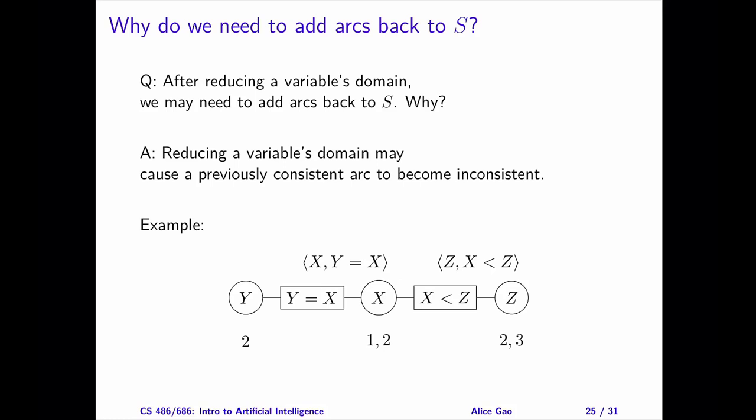Let's look at an example. The diagram shows three variables, Y, X, and Z. There are two binary constraints, Y equals X, and X is less than Z. Consider two arcs. One with X as the primary variable, with the constraint Y equals X, and the other one with Z as the primary variable, and the constraint X is less than Z.